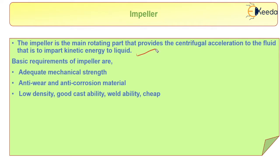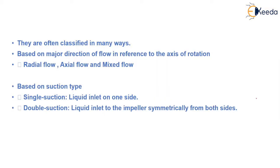Now we need some criteria for the impeller. It should have adequate mechanical strength, anti-wear and anti-corrosion material, low density, good castability, weldability, and it should be cheaper. So these are a few things about the impeller.